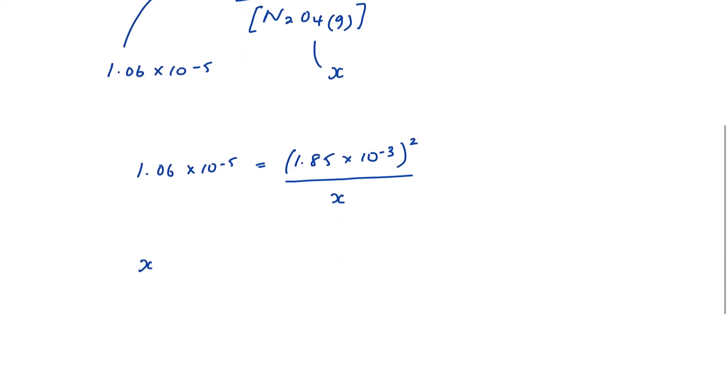x is going to equal 1.85 times 10 to the minus 3 squared over 1.06 times 10 to the minus 5.